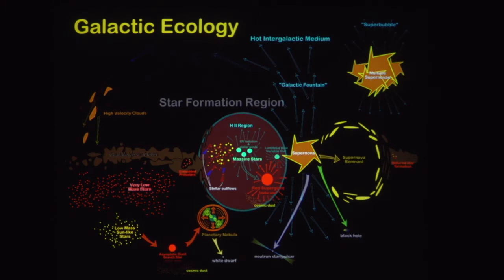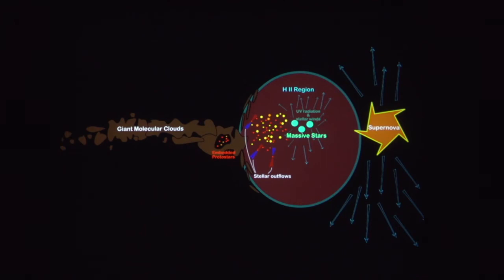Galactic ecology refers to the fact that in our galaxy, stars are being born, they live, and they die. This process can be seen in various stages in different parts of the galaxy. The part I'll focus on involves giant molecular clouds — dark clouds in our galaxy that are cold enough and dense enough that portions of those clouds can collapse to form stars.